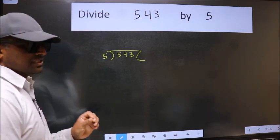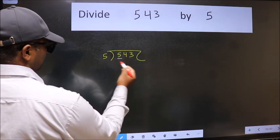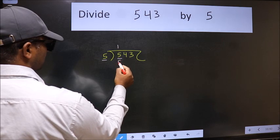This is your step 1. Next, here we have 5 and here also 5. When do we get 5 in the 5 table? 5 once is 5.